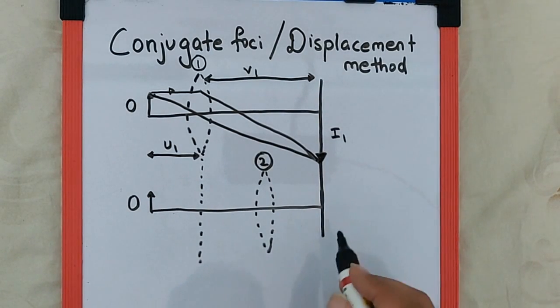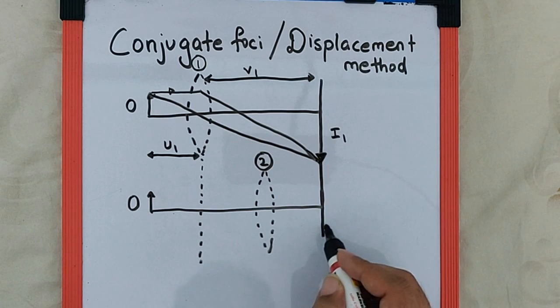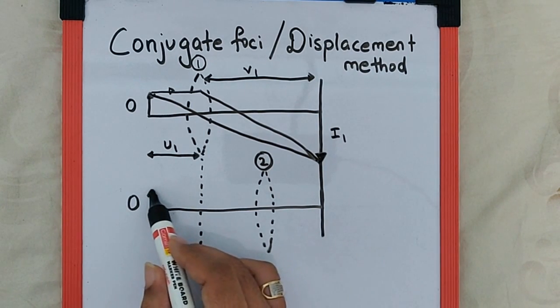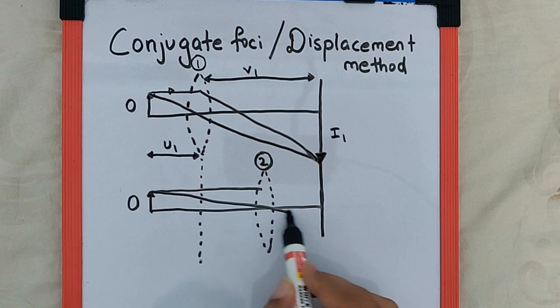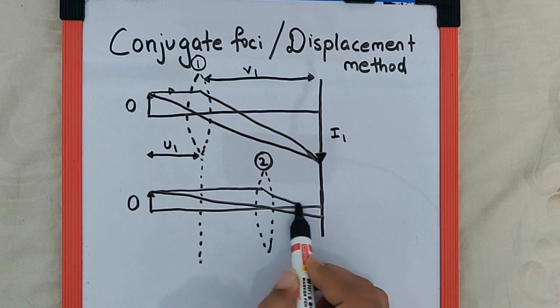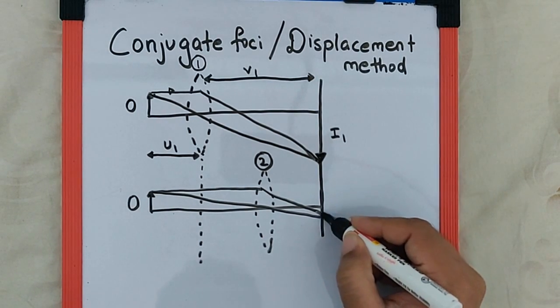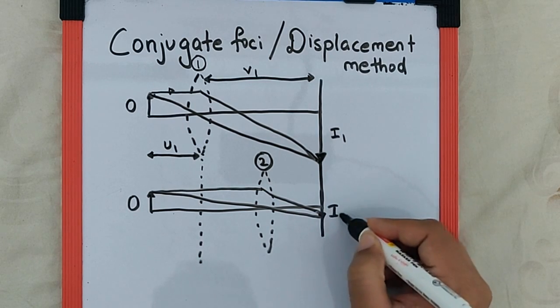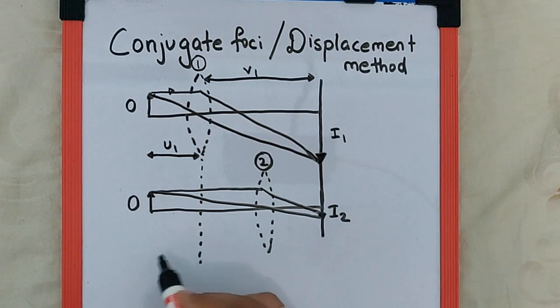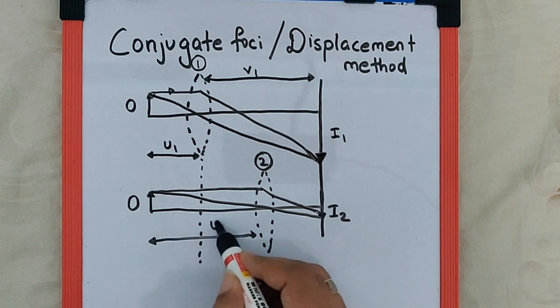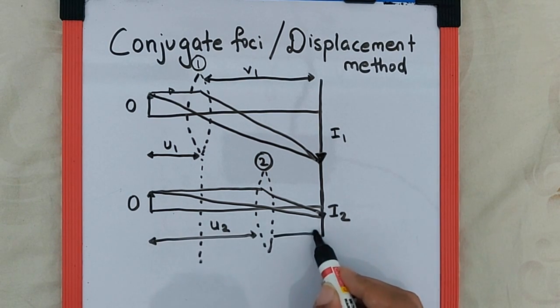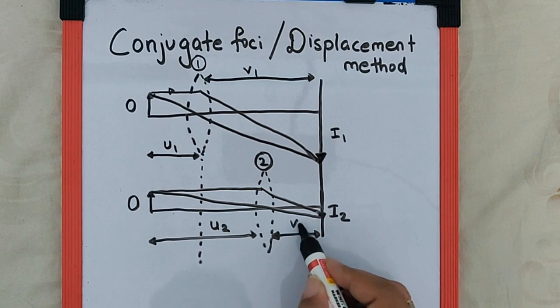we again get a clear image on the screen and that is going to be a diminished one as I2, where the object distance this time is U2 and the image distance is V2.